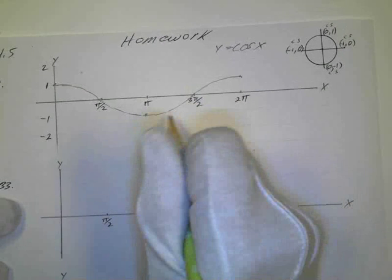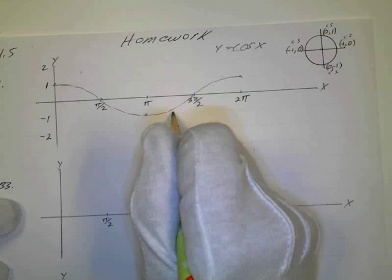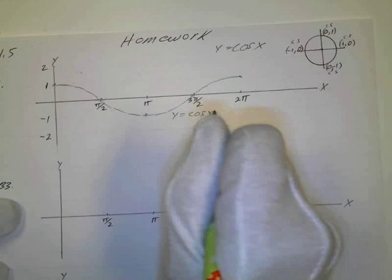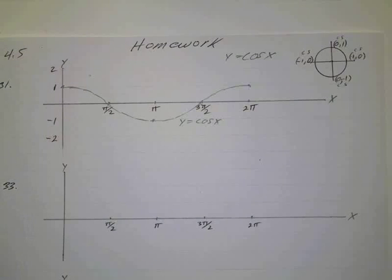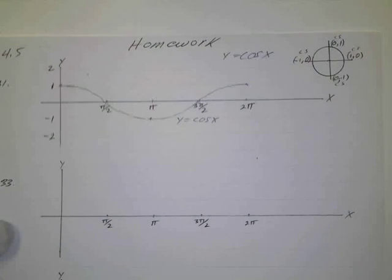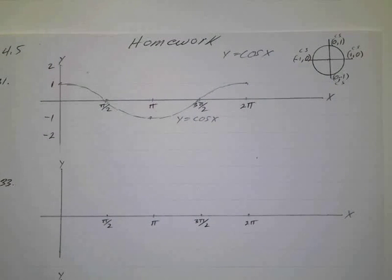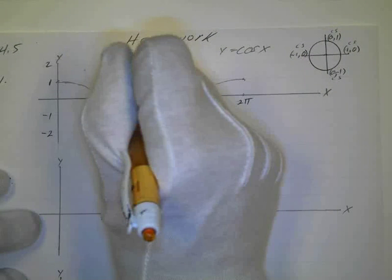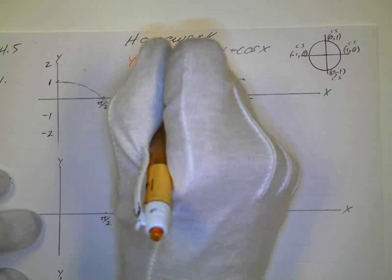That's Y equals the cosine of X. And then the graph they have for number 31 is Y equals 2 cosine of X. So that would be this, Y equals 2 cosine of X. That's the same thing except my amplitude is 2.